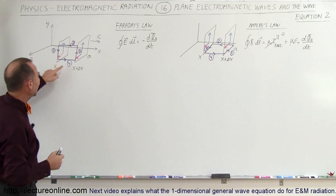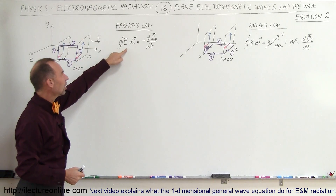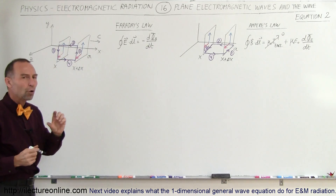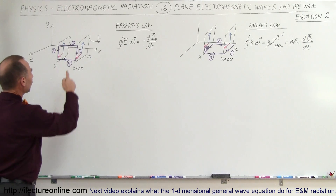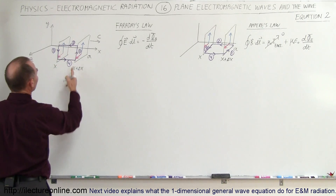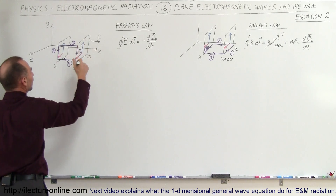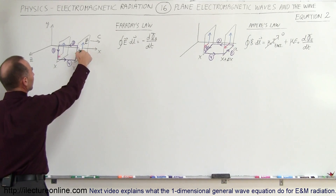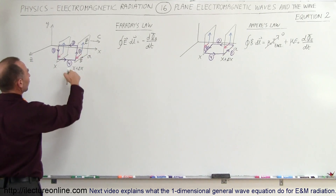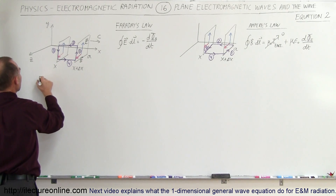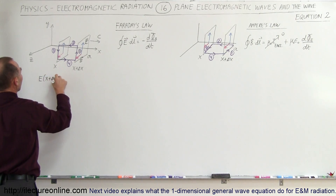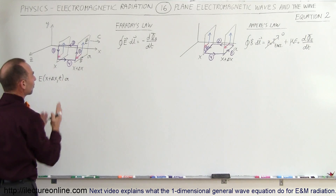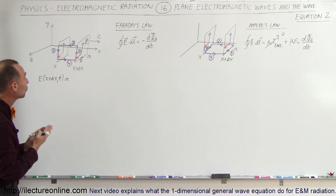We're going to integrate around this loop using Faraday's law — adding up all the products of the electric field strength times the distance traveled over that closed loop. There are four different integrations, so we'll do one at a time. The first one is parallel to the electric field strength. The electric field is in blue, the magnetic field in red. So for the first integral, we have the electric field strength E, which is a function of x plus delta x and time, multiplied times the distance a, and since they're both in the same direction, cosine of zero is one.